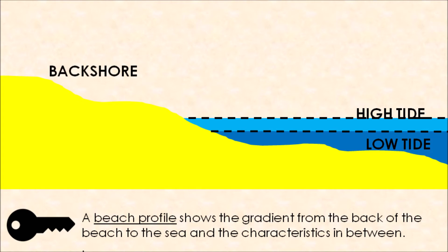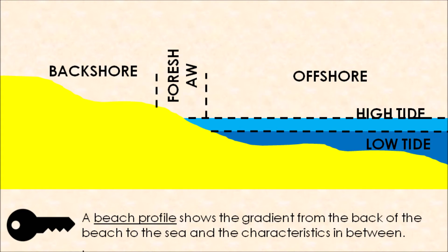The backshore refers to the back of the beach, while the foreshore is the front of the coastline — typically where the high tide line always comes up to. You might also hear the term offshore, which means off the coast, out in the sea area, and that is known as your offshore section.